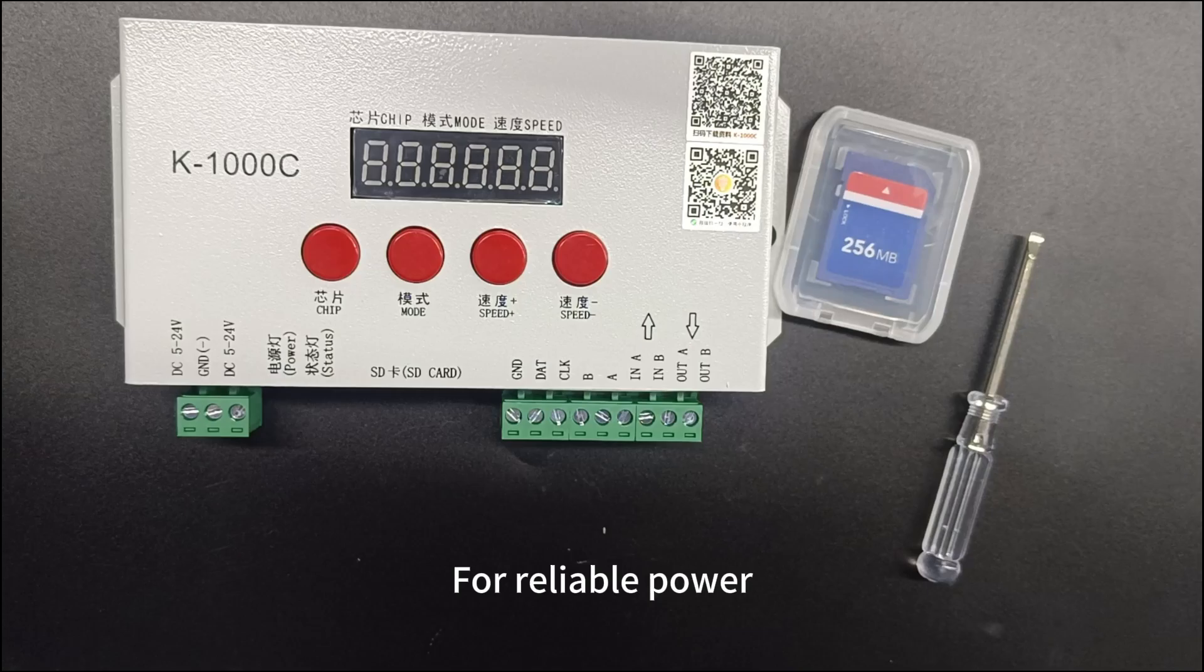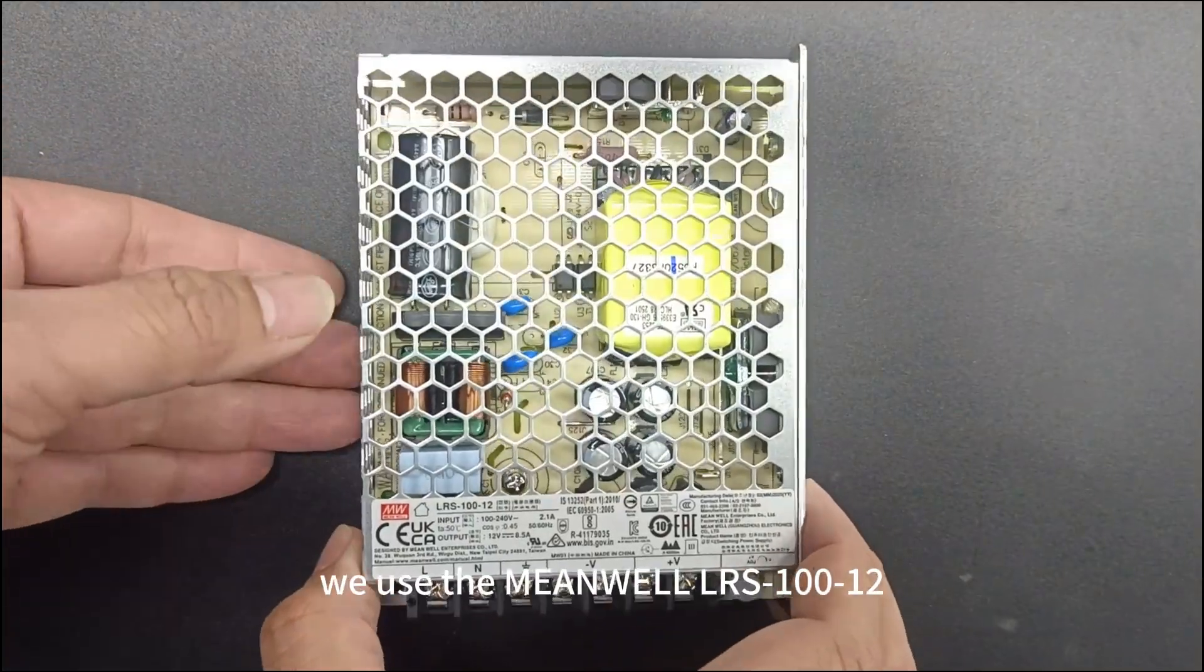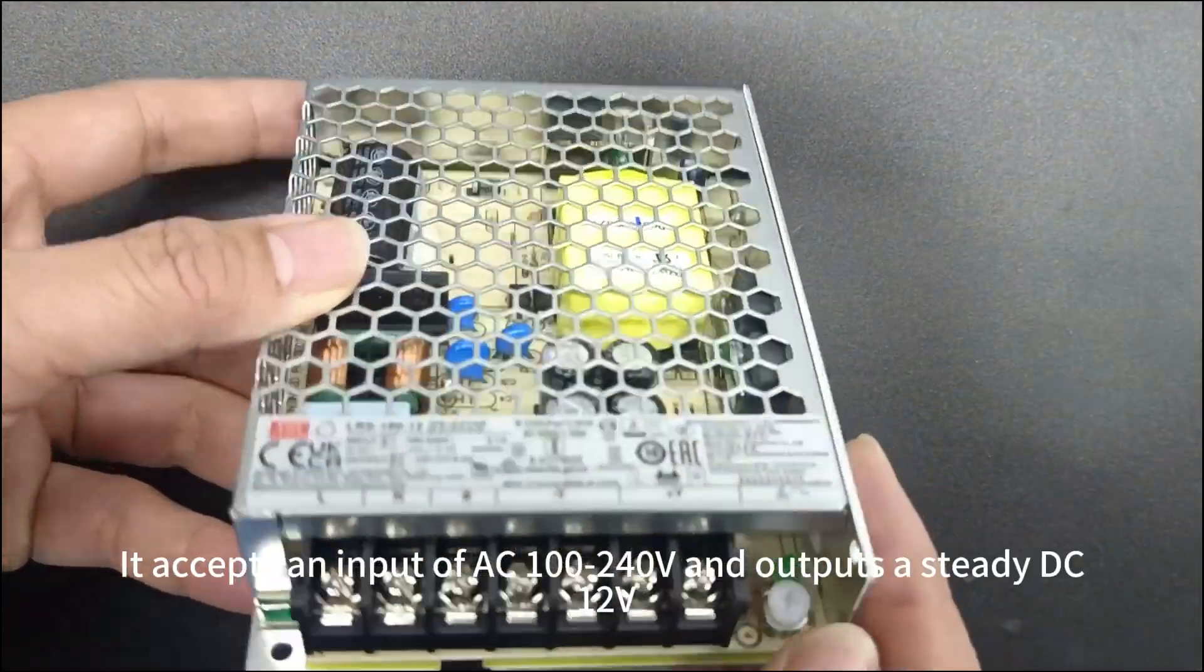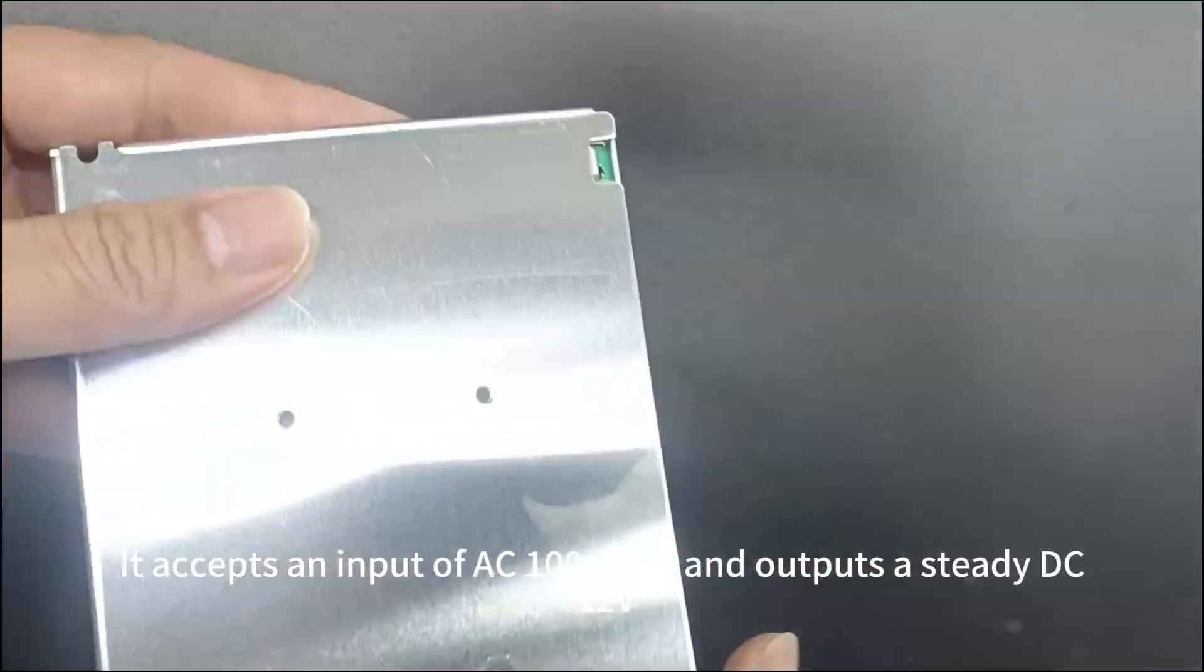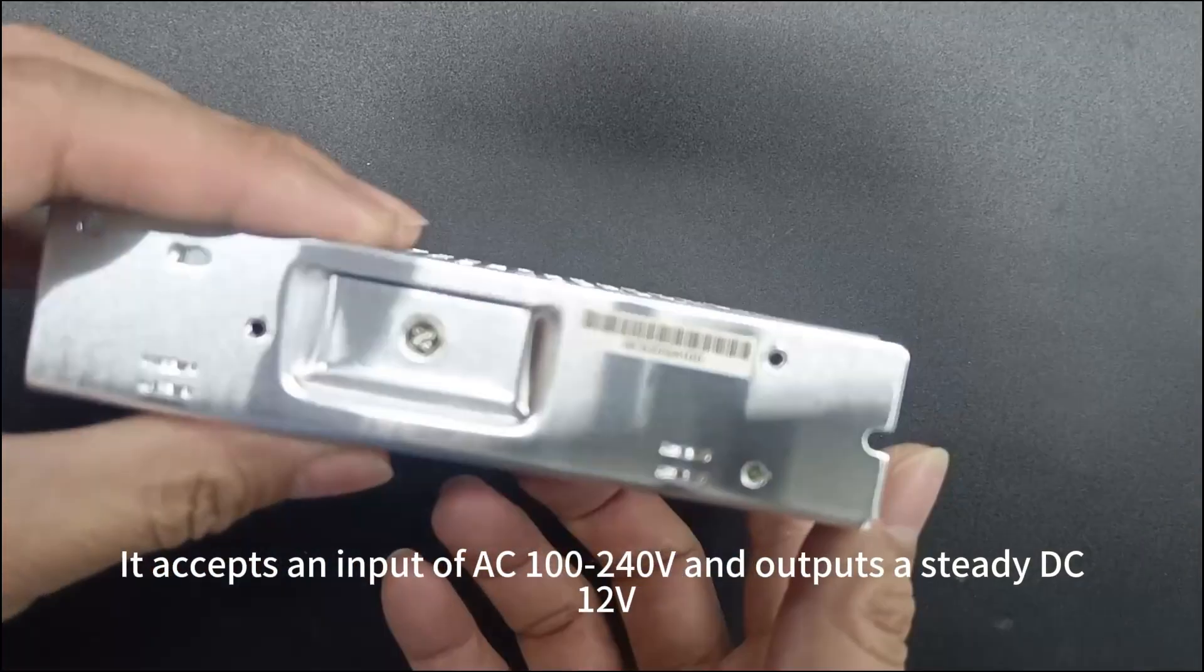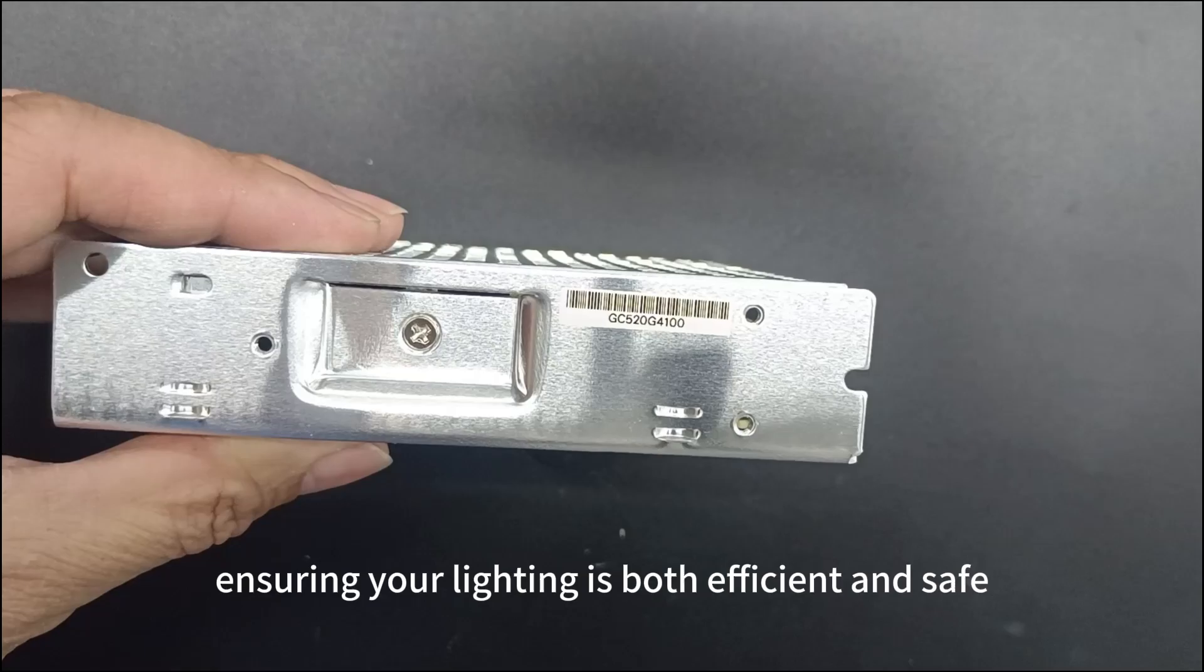For reliable power, we use the Meanwell LRS10012. It accepts an input of AC100 to 240V and outputs a steady DC 12V, ensuring your lighting is both efficient and safe.